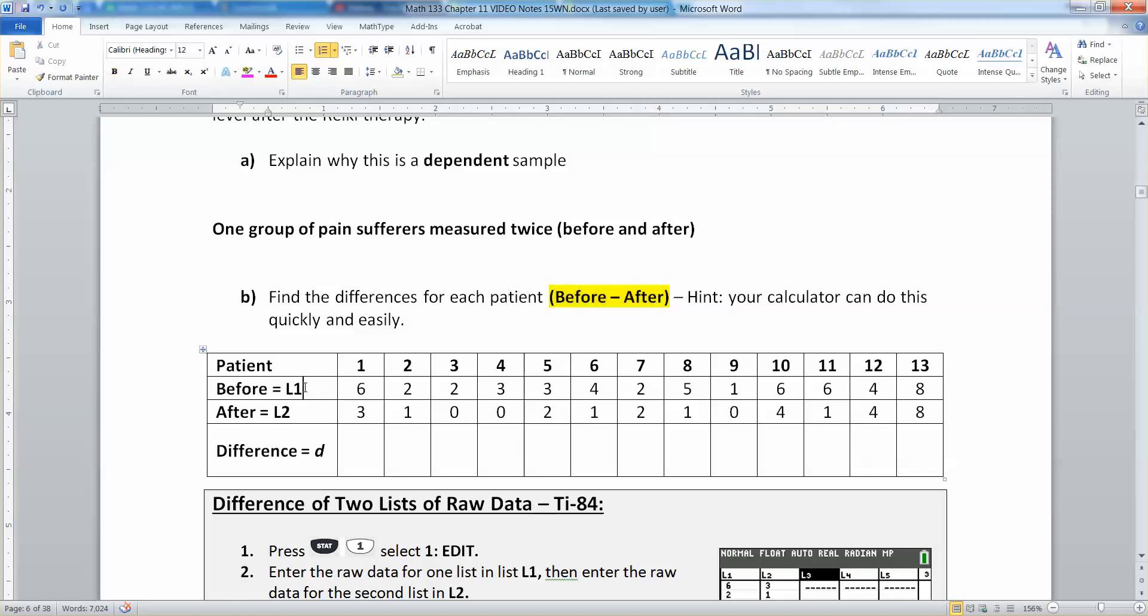All right, so what I'm going to do over here is I'm going to label L1 to be my before group and L2 to be my after group, and then I want to find the differences. Now, we all could do this in our heads. You know, six take away three is three, two take away one is one, and so on. However, I also want to teach you how to be able to do this with a calculator.